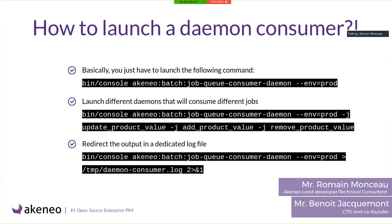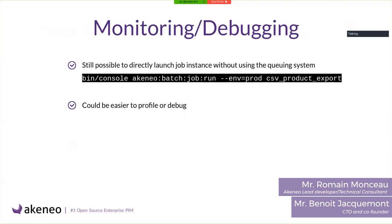Another interesting point is how to redirect the output to a dedicated log file — this is basically what we should do for every job. Now, how to monitor and debug: when you launch a job via the queue consumer, you cannot directly see what happens. It is still possible to launch a job directly from the command line for debugging and monitoring the backend process. And if you have Blackfire, or want to debug with Xdebug, that works too.